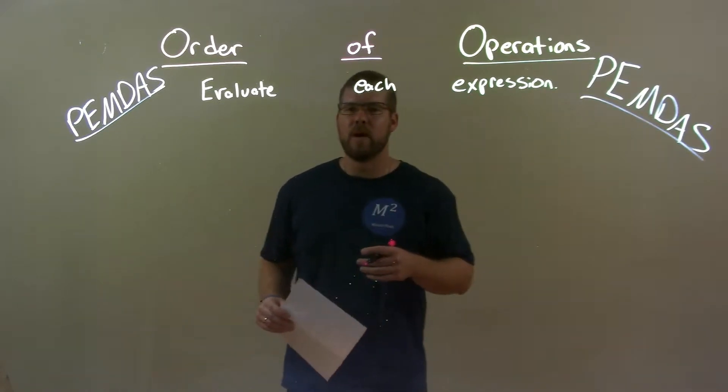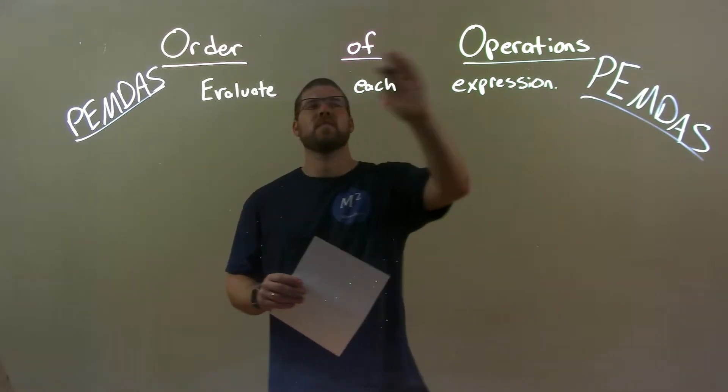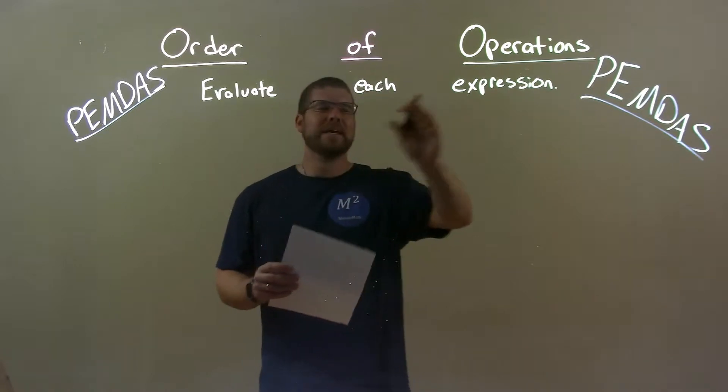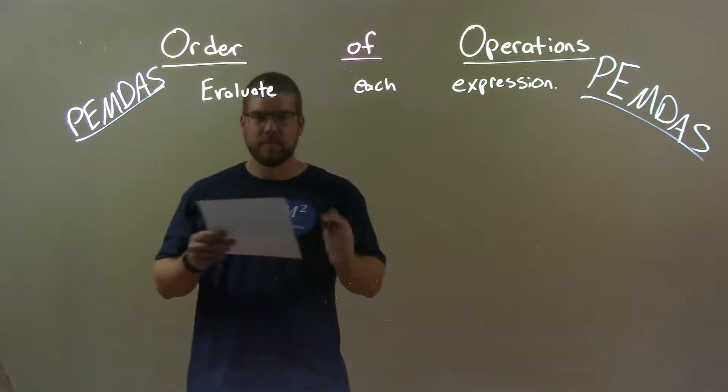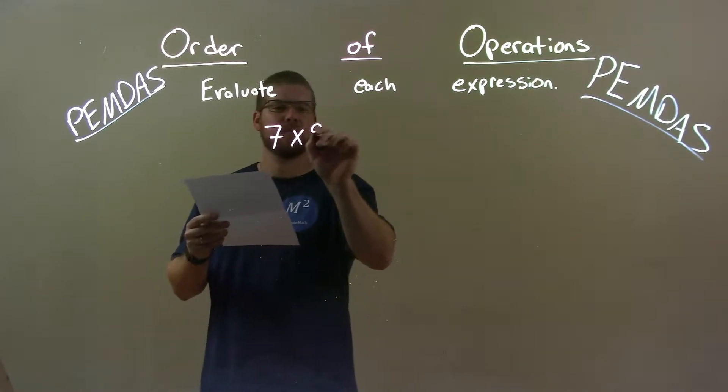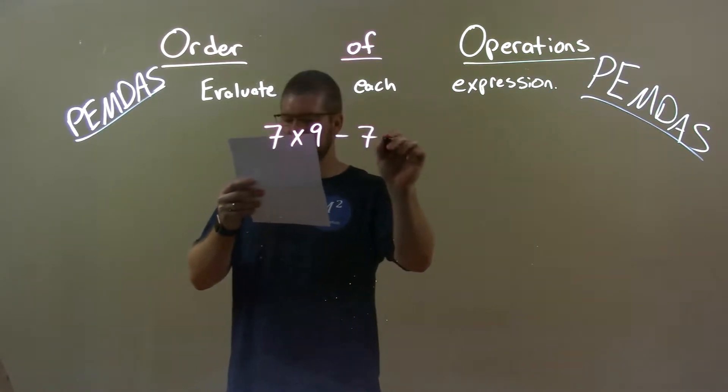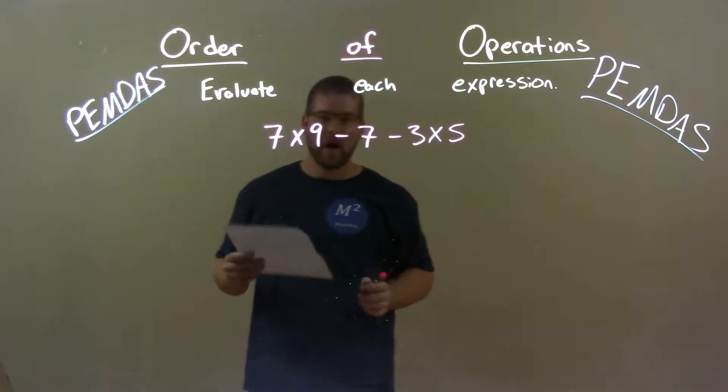I'm Sean Gannon and this is Minute Math and today we're learning about the order of operations when evaluating each expression. So if I was given this expression 7 times 9 minus 7 minus 3 times 5...